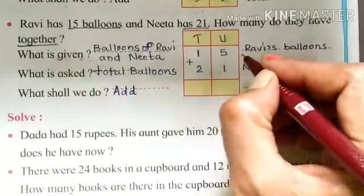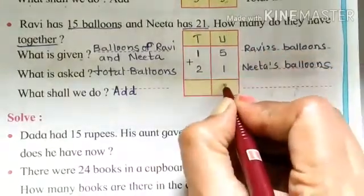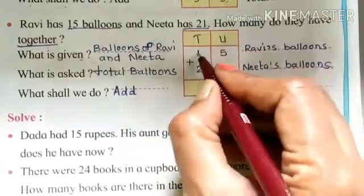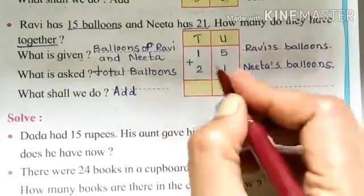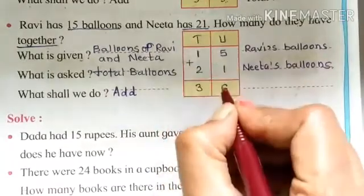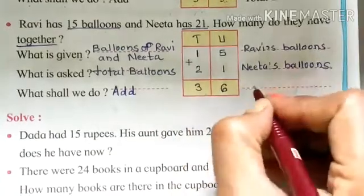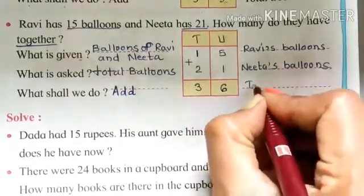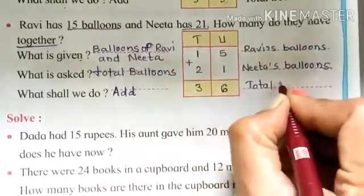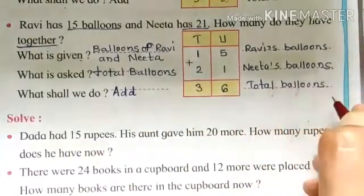Now let us add them. Unit place first, 5 plus 1, 5 plus 1 equals to 6. Then tens place, 1 plus 2, 1 plus 2 equals to 3. So 3 tens, 6 unit, the number is 36. What are these 36? These are total balloons. Total balloons.